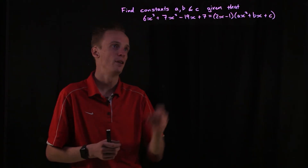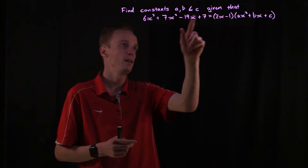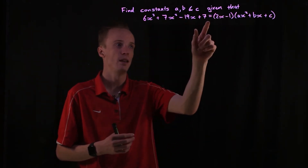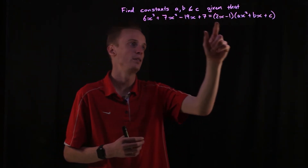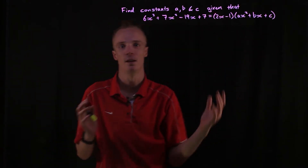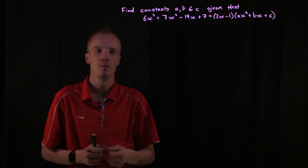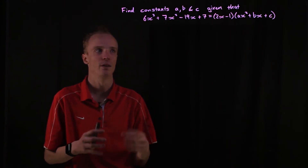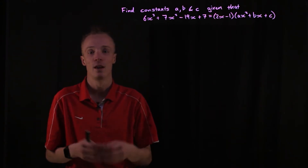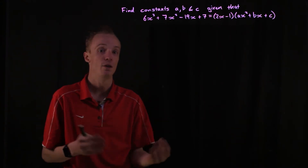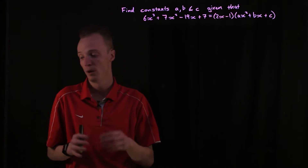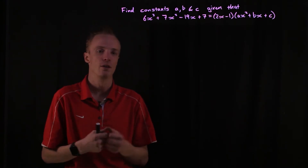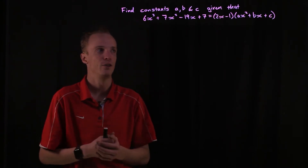Here, I've been asked to find the constants a, b and c given that this cubic here is equal to this cubic here. What we're going to be doing is following a process known as equating polynomials, or specifically the skill of equating coefficients.